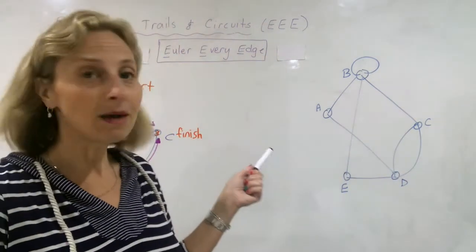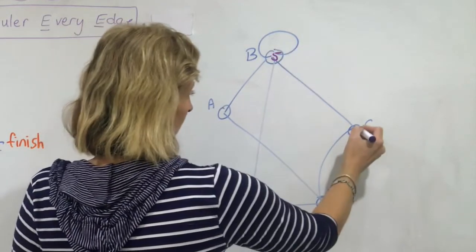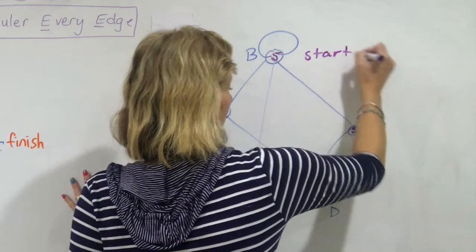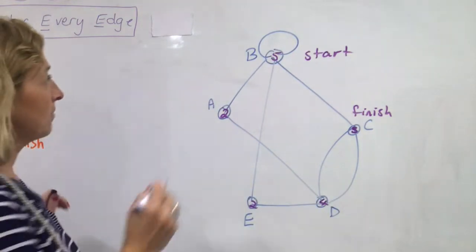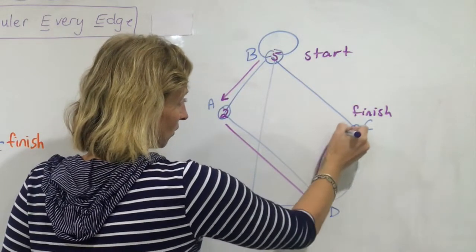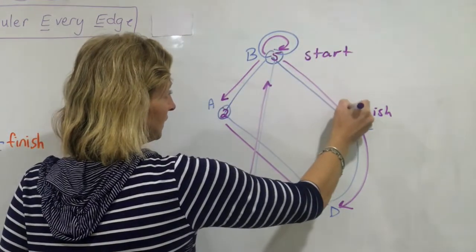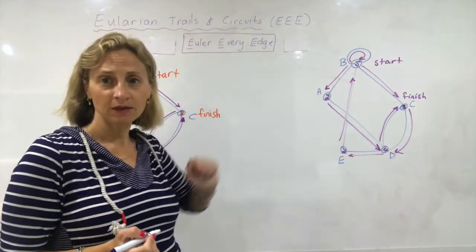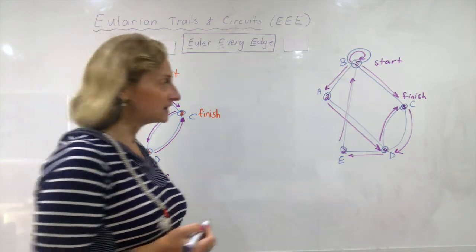Now I'll do a different option on the other side. I confirm the same degrees: this vertex has five, this one has three, this one has four, and these two have two degrees each. Of course, I need to start and finish at my two odd degree vertices. I'm going to start at B — though you could start at C — go down to A, then down to D. This time I'm going to go up first, come back down, then go across, go around and finish over there. I have gone through every edge — Euler every edge — and started and finished at my two odd vertices.